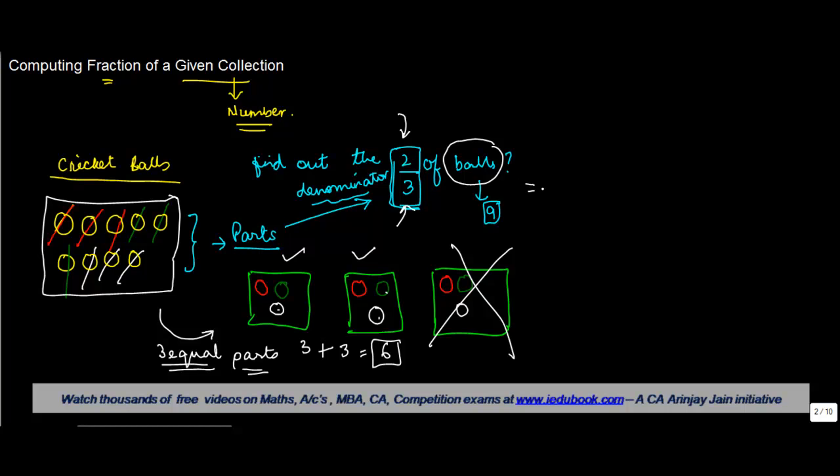So two-thirds of the balls will be equal to six. Now this is a very lengthy manner of calculating a fraction of a given collection. Normally the way you can achieve the same result more easily is as follows.